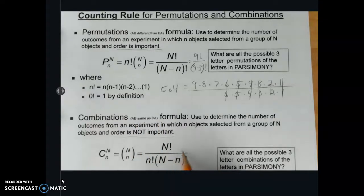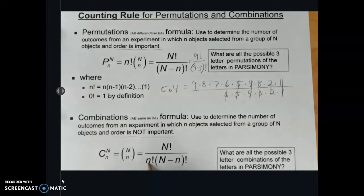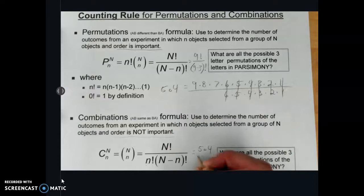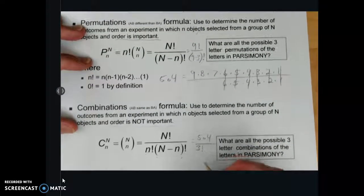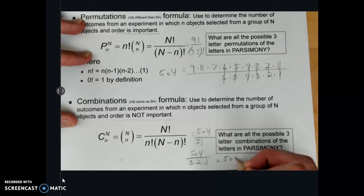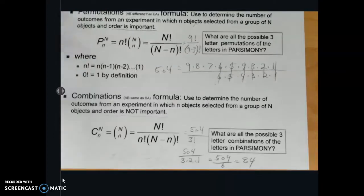Now, if we use the formula, you'll notice it's exactly the same as permutations, except for this add-on in the denominator, n, little n factorial. So we're just going to take our 504, which is what we got, and we're going to divide that by little n factorial. Well, little n is still 3 factorial. And that works out to 504 divided by 3 times 2 times 1, which is, of course, equal to 504 divided by 6, which equals 84. So 84 is the number of combinations you will find.